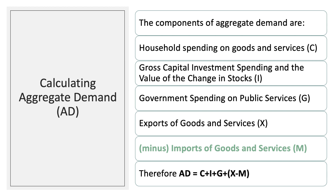Plus the value of exports of goods and services — an injection into the circular flow — giving us C plus I plus G plus X. But minus the value of imports of goods and services; those products come into the economy, but of course money to pay for them leaves the circular flow. Therefore, aggregate demand is C plus I plus G plus (X minus M), and the X minus M is the net balance of trade in goods and services.